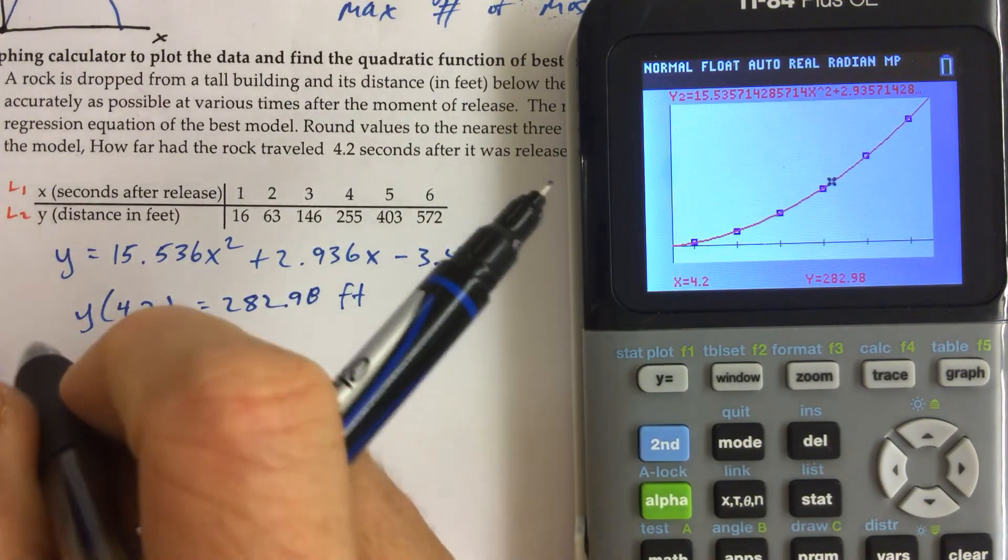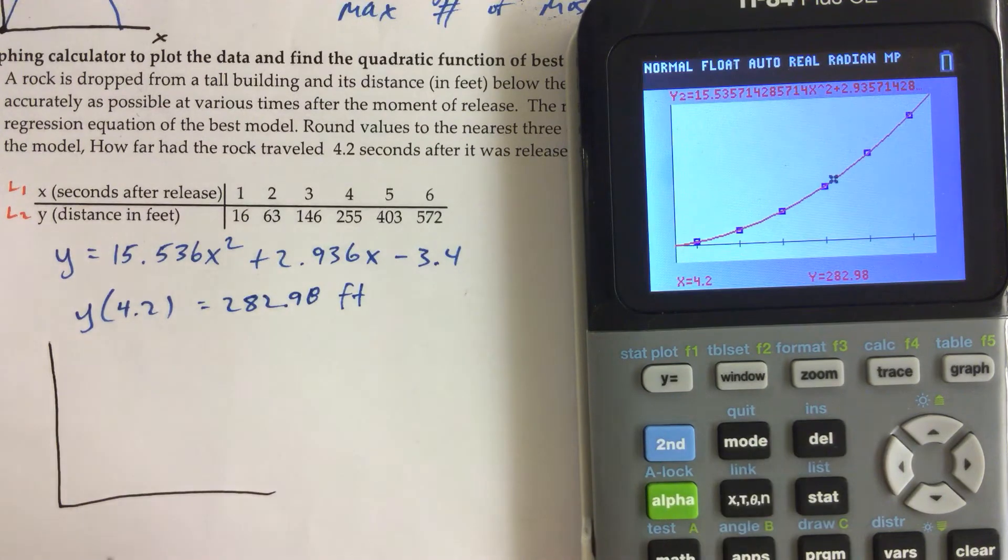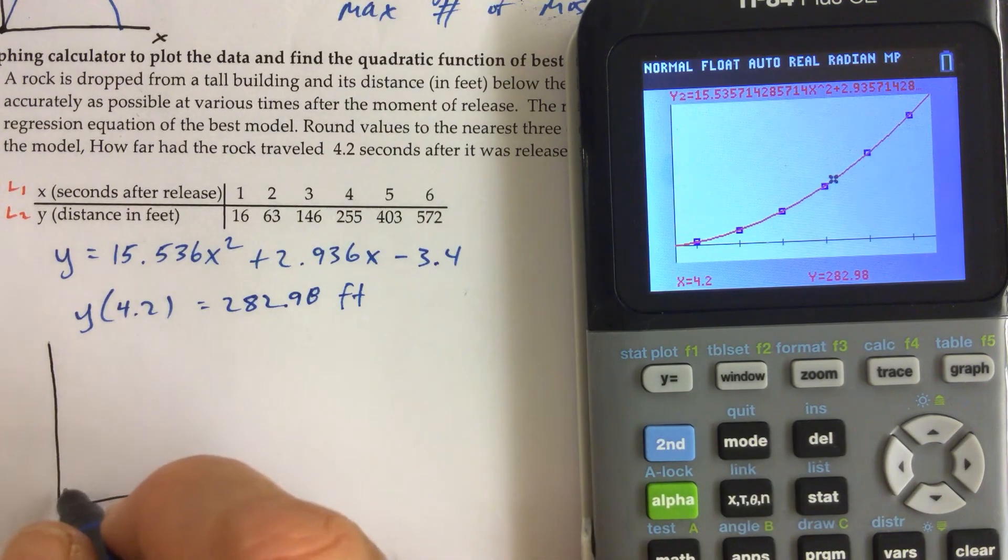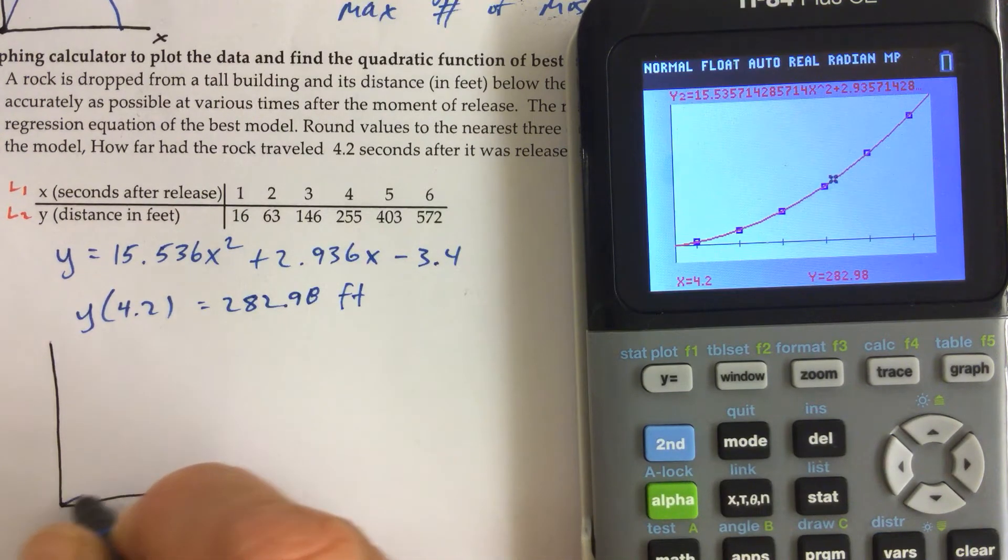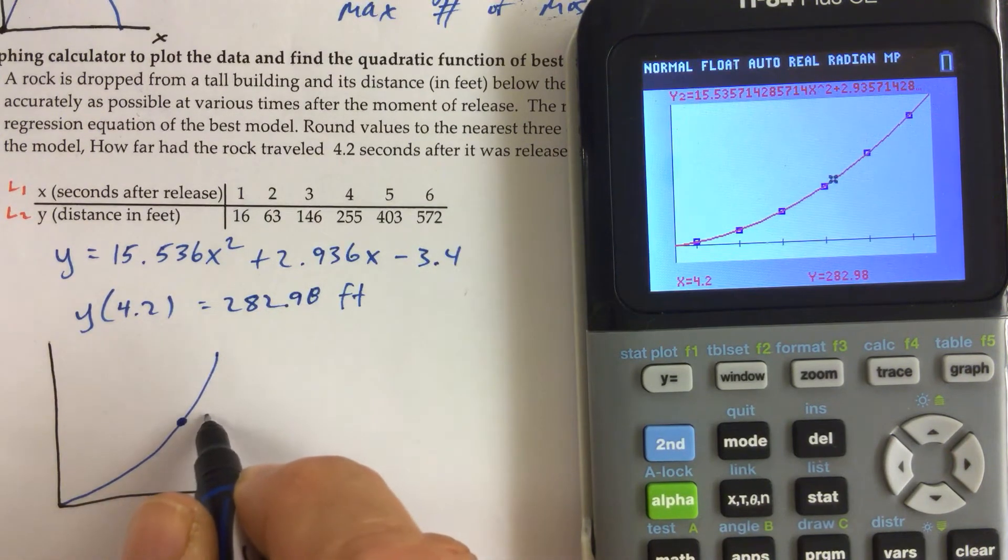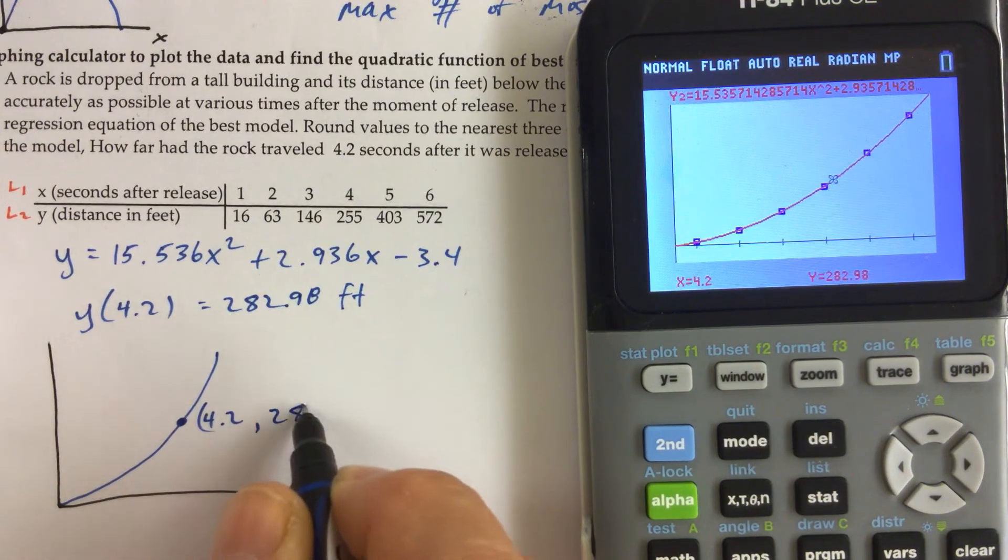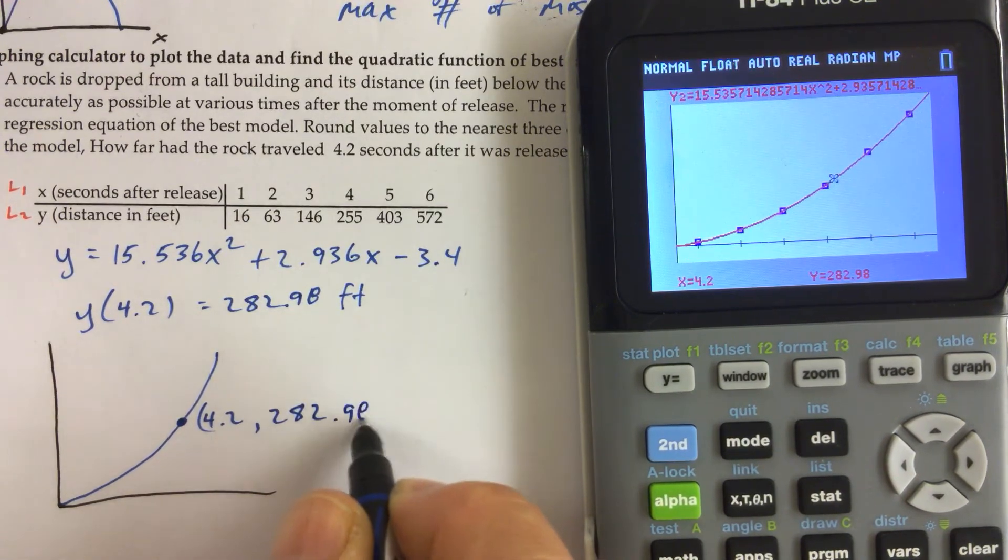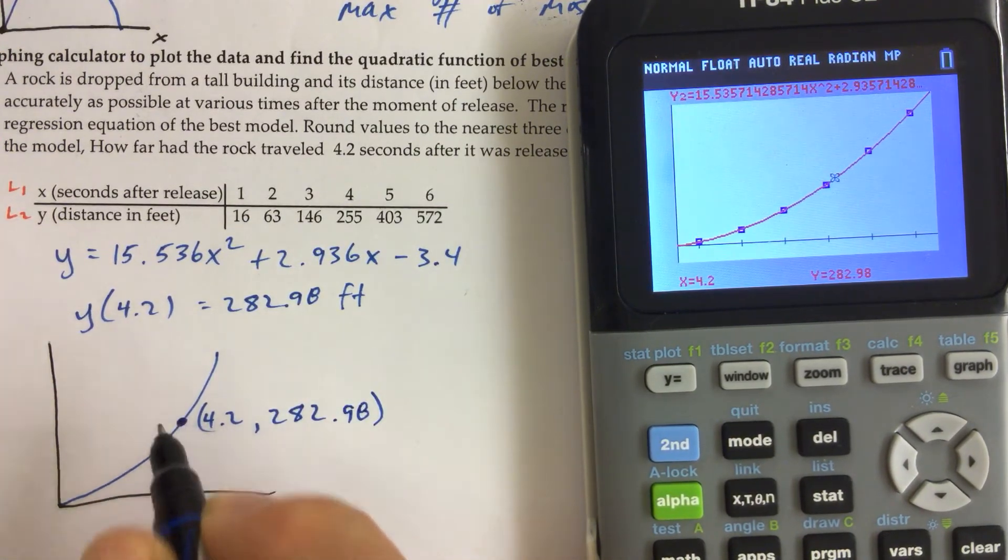And how do we show that? Well, we could show the graph, and we could show that, let's see here, it goes up like that. And then we have the ordered pair 4.2, 282.98, like that. So we can show it like that.